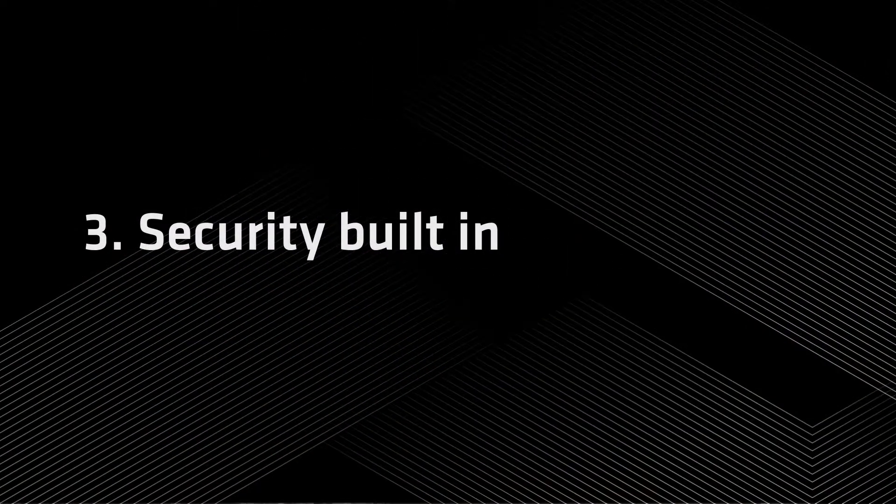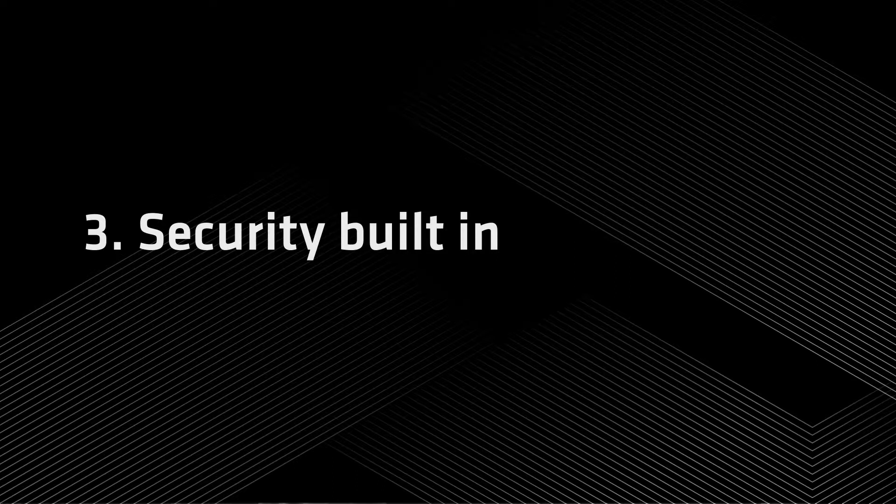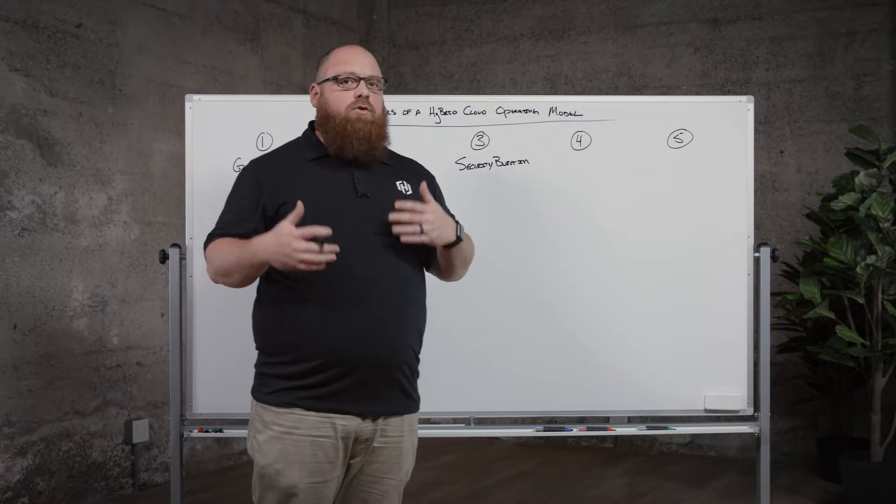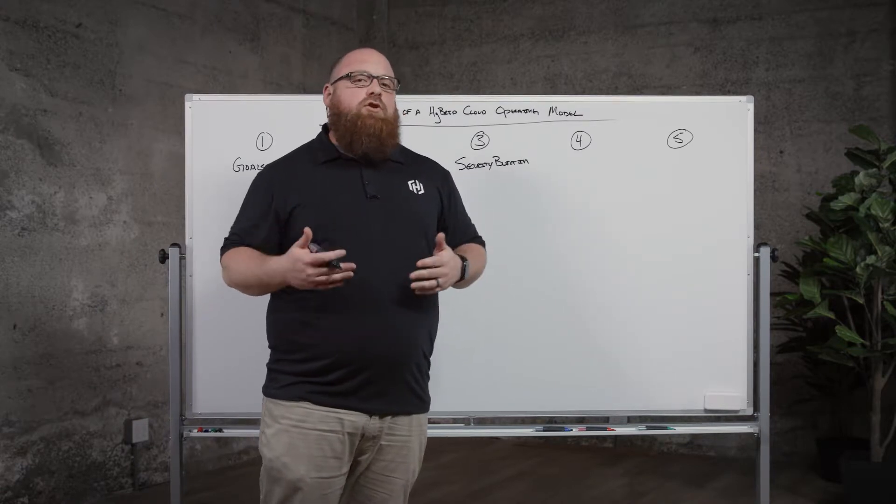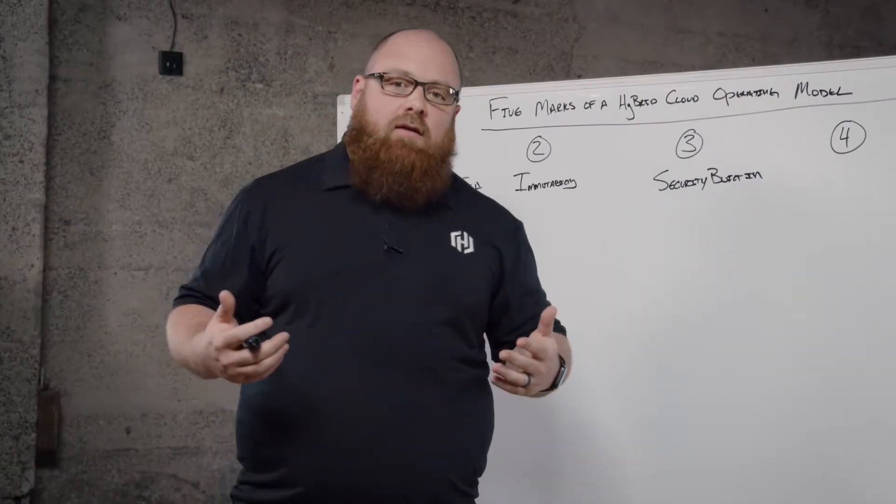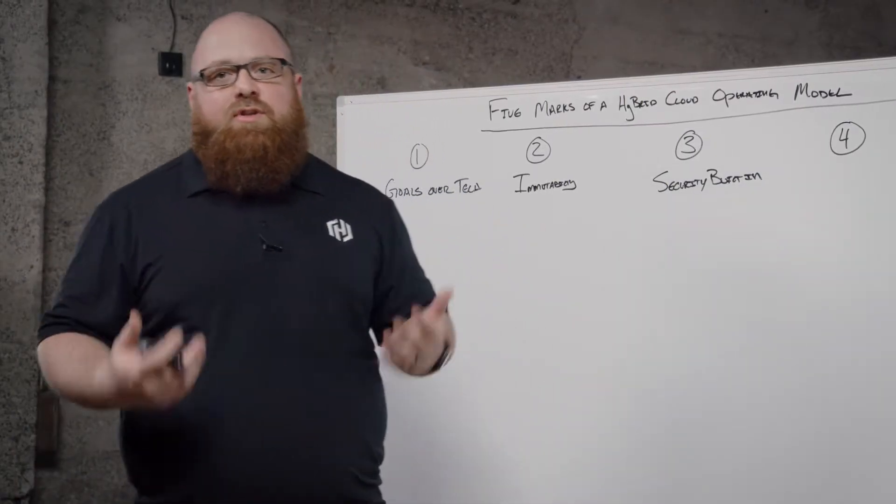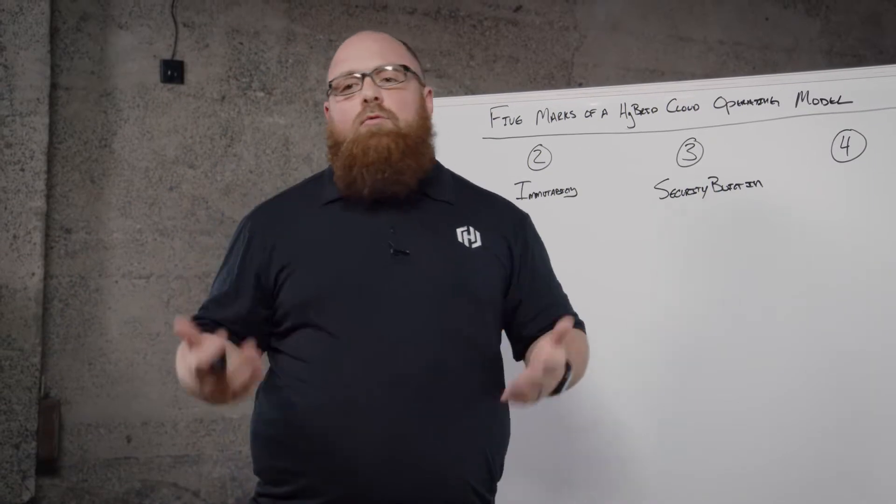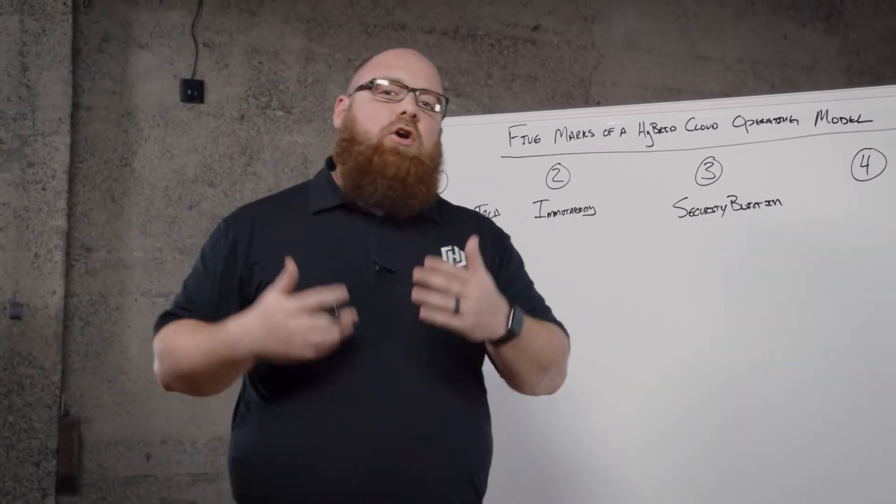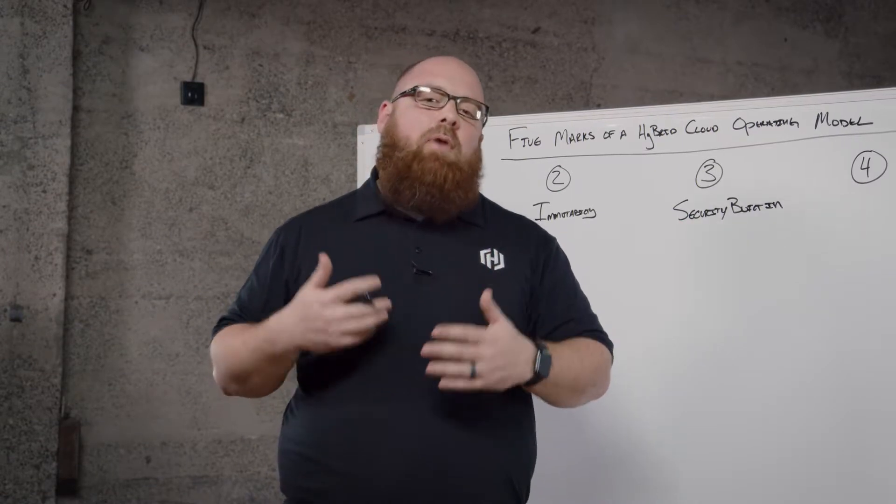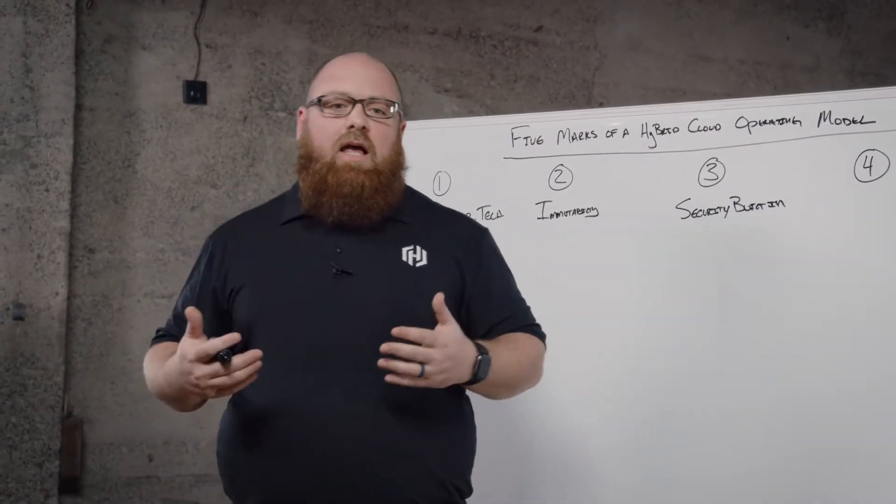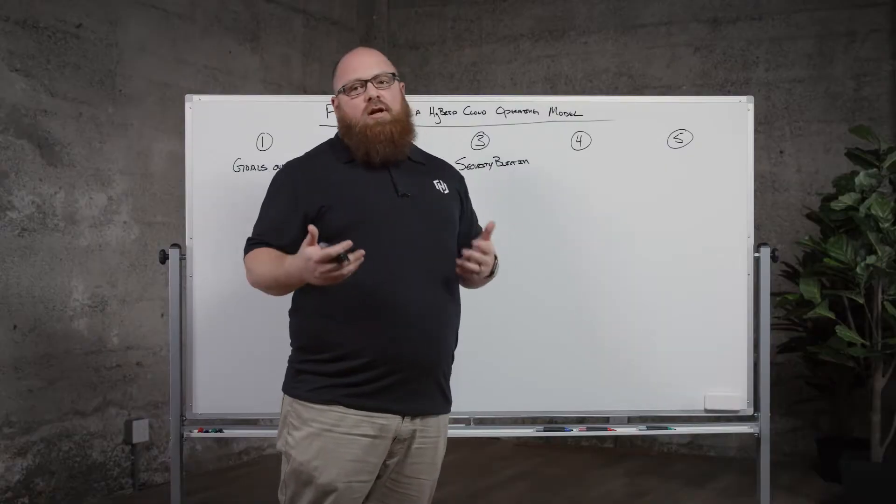The third mark of a hybrid cloud operating model is security built in. Traditionally, in deployment pipelines or deployment processes, security is usually a check mark along the way. So you spend a lot of time developing, you spend a lot of time working on these applications or this infrastructure, and then you have to come to a point where there's a security check where they have to go over and comb everything about that deployment or about those applications and really start to distill out and say, have you passed our security checks or not?